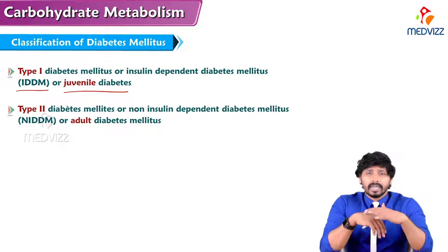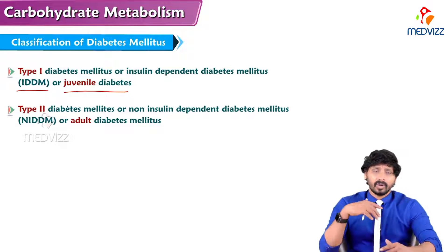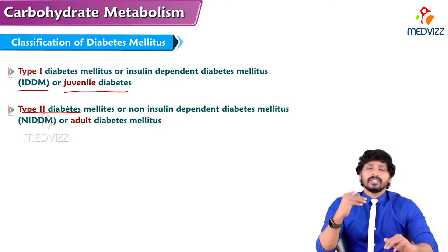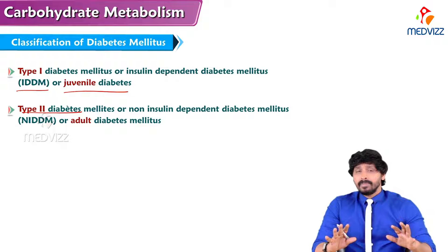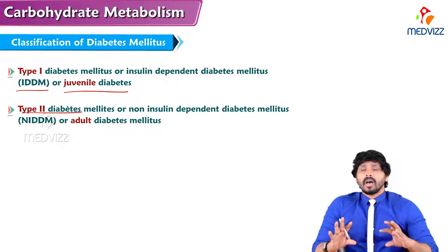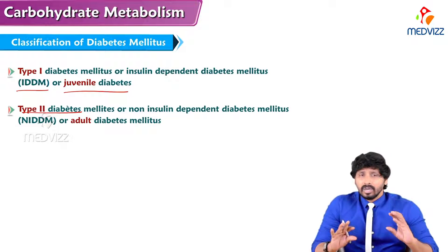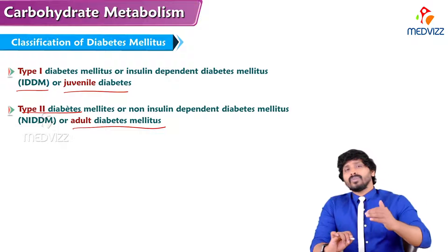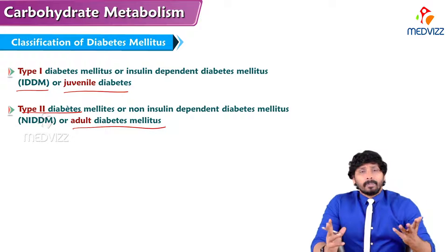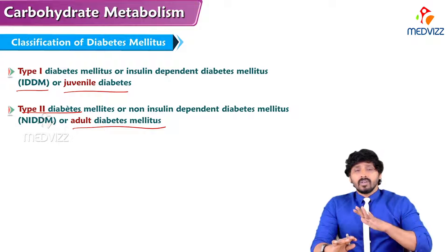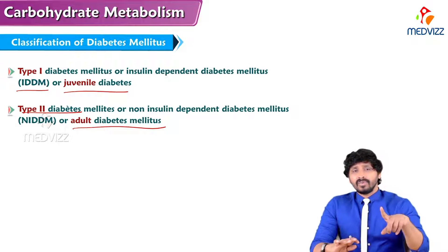Teenage people are more prone to Type 1 diabetes. Type 2 diabetes mellitus, or non-insulin dependent diabetes mellitus, develops with the progression of age as insulin resistance keeps increasing. There is little or sufficient insulin produced, but skeletal muscles and other cells are not responding to it — that is insulin resistance. This is known as adult-onset diabetes mellitus; after about 40 years of age, insulin resistance progressively develops leading to Type 2 diabetes mellitus.